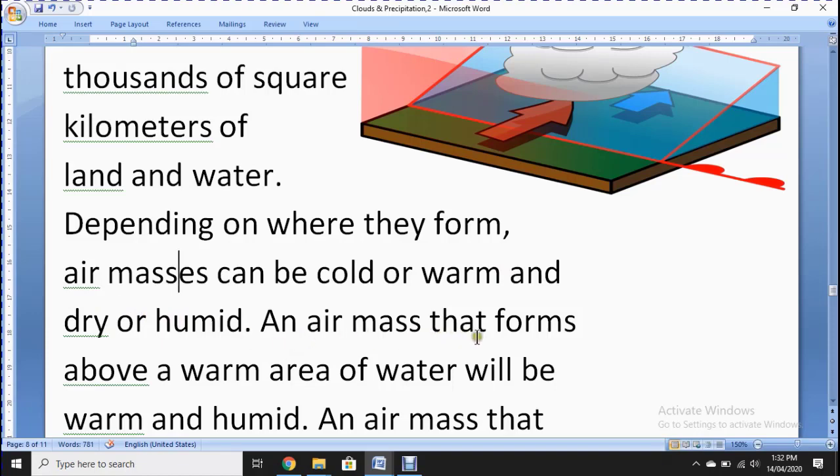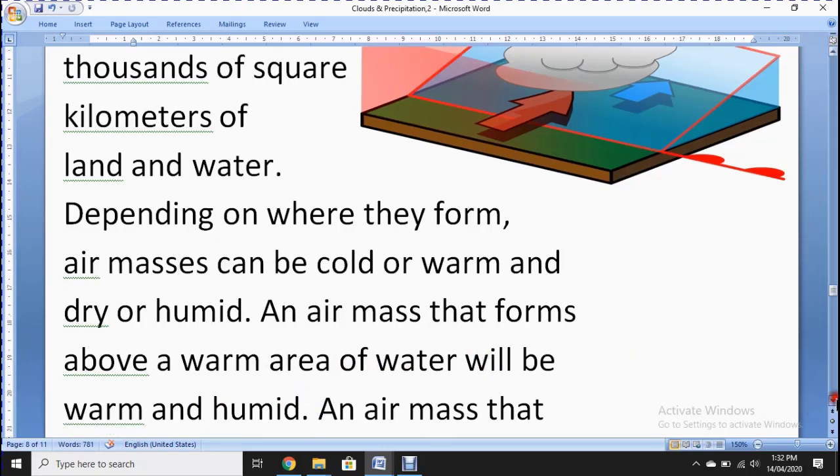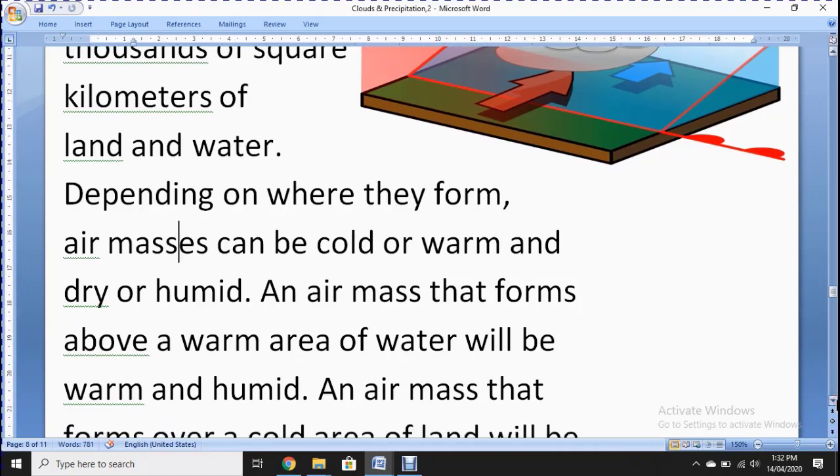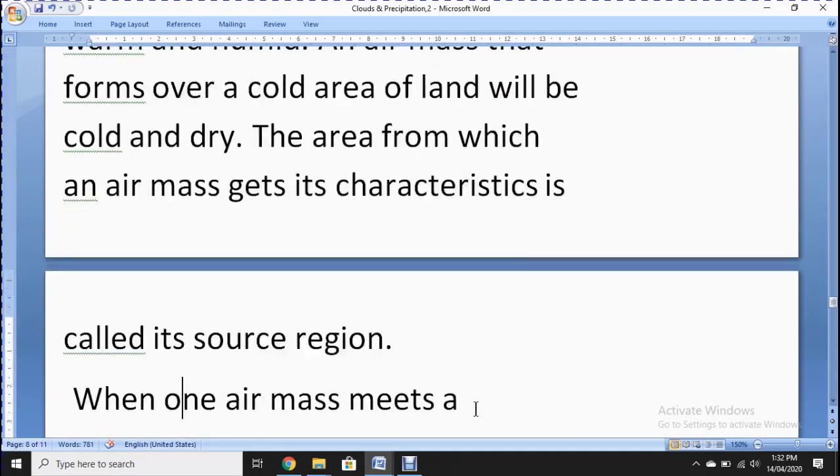An air mass that forms above a warm area of water will be warm and humid. If air moves over ocean or river, it contains water vapor and becomes moist.